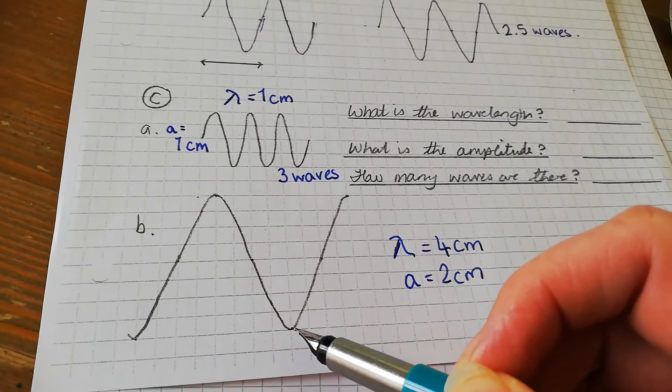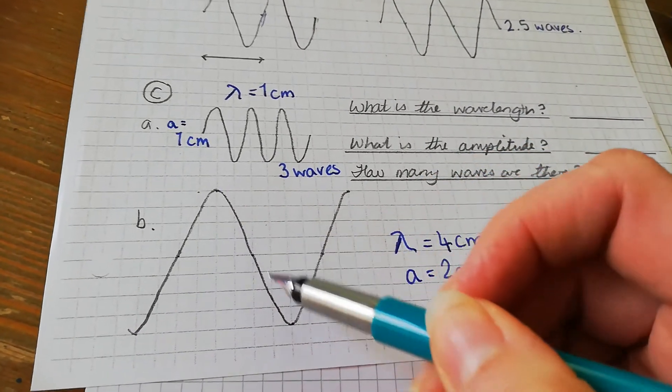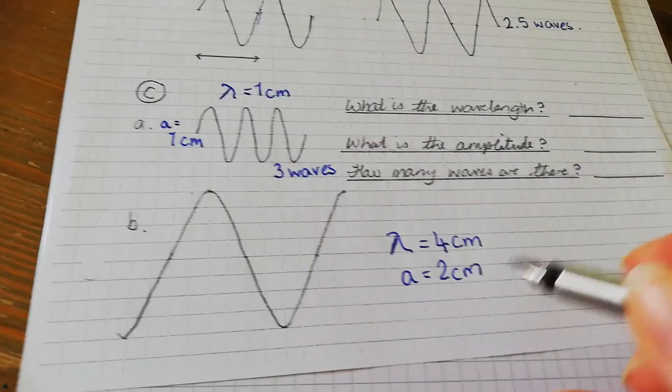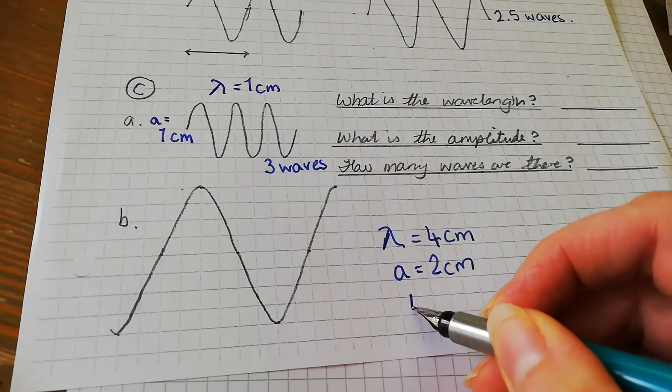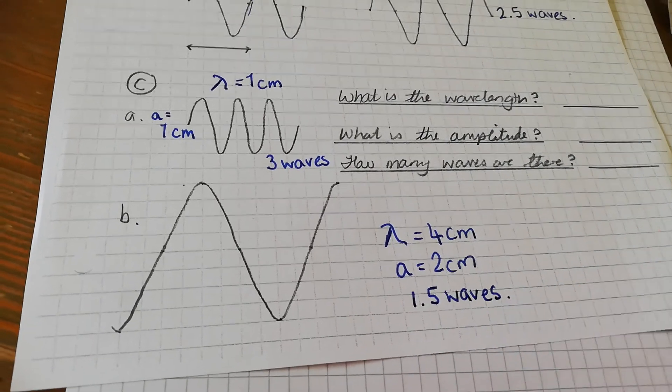We've got one wave here and then we've got another half. You can use the pattern repeat method as well: one and a half, so 1.5 waves in that diagram. Bye!